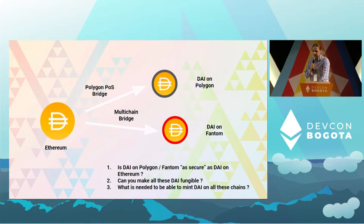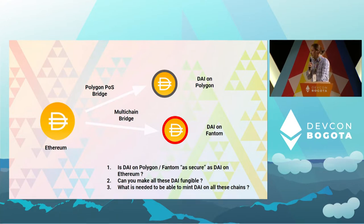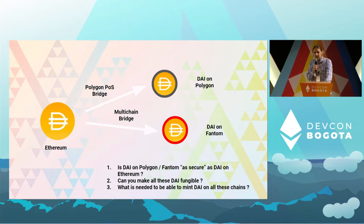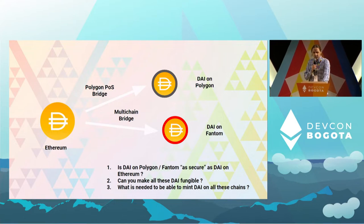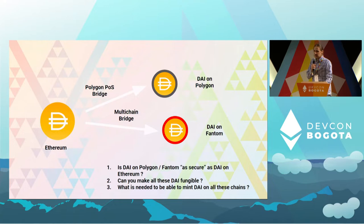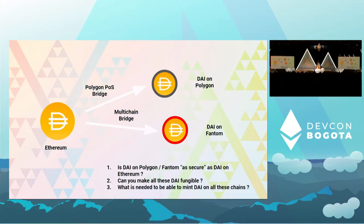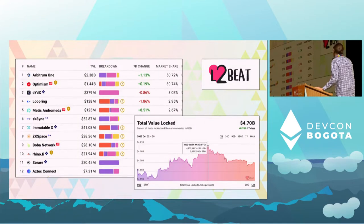The security properties of the DAI will be very different. For MakerDAO, it is of the utmost importance that DAI is censorship resistant. And if you hold DAI on all these other chains, you should really ask yourself: is this really the DAI that you hold on Ethereum? Does it have the same properties or is it actually different? Can you make all these different DAIs fungible? And what is really needed to be able to mint DAI on all these other chains? These are actually quite hard questions, and that's why it took us so long. This is how L2Beat was born.